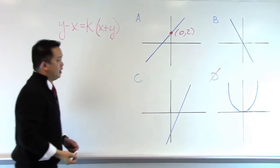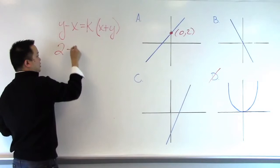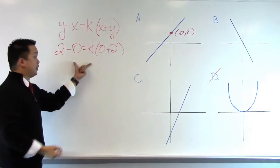If I take my ordered pair 0, 2, and plug that into this equation, I would get 2 minus 0 is equal to k times 0 plus 2. Solving this down, we will get 2 is equal to k times 2.